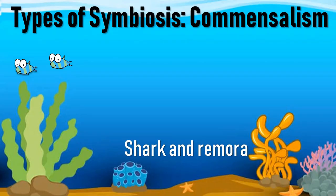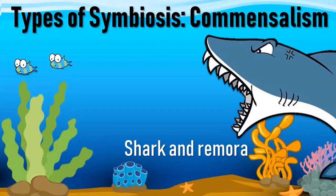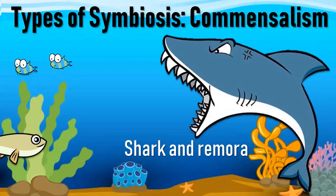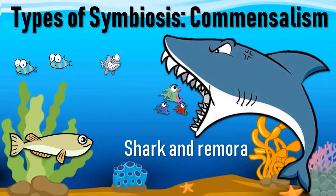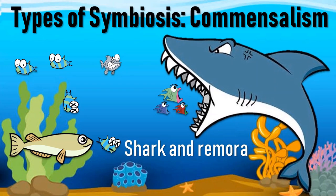A good example of commensalism is that of a shark and remora fish. When the shark feeds on small fishes, it might leave leftovers which are consumed by the remora fish. The shark is unaffected by this; however, the remora fish is benefited.